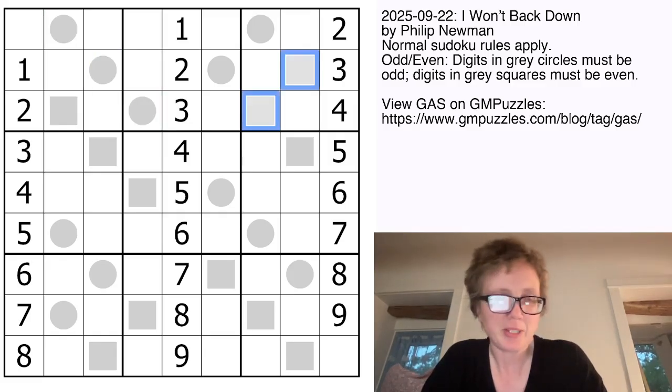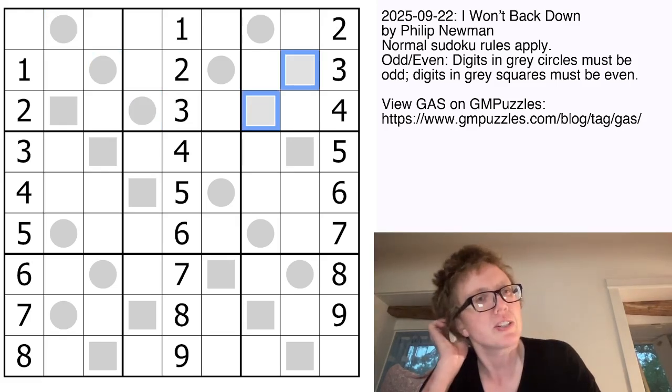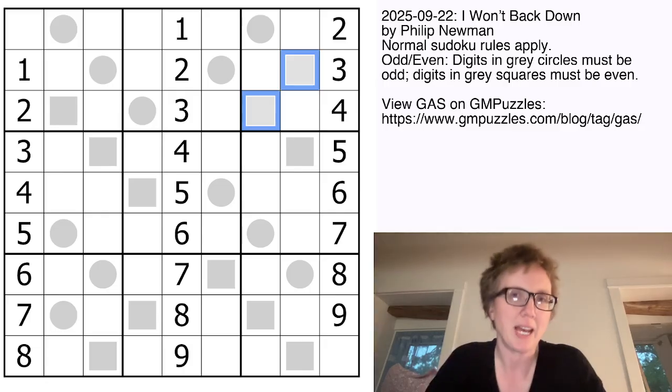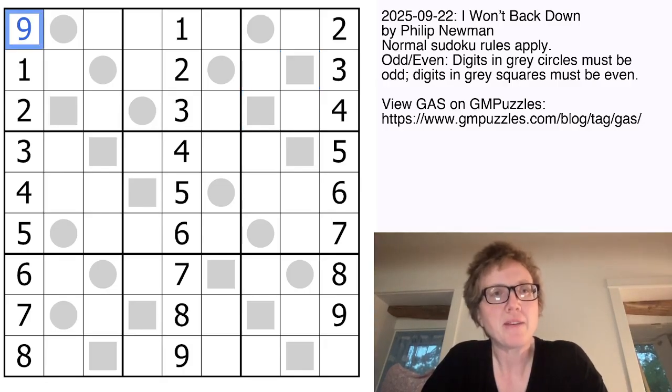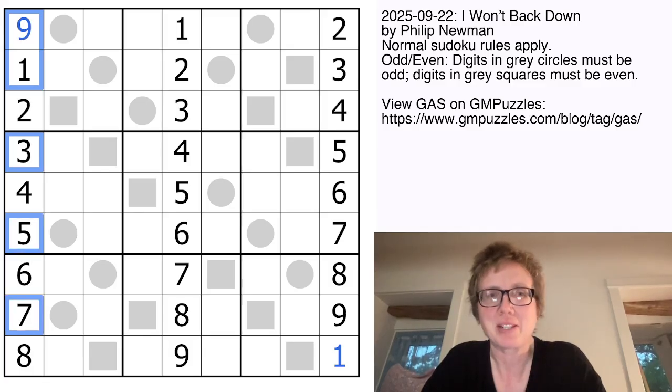We have standard sudoku rules, placing the digits 1 through 9 once each in each row, each column, and each outlined 3x3 region. On top of that, some cells are marked with gray circles and some with gray squares. The gray circles will always have odd digits, and the gray squares will always have even digits. I'm going to start by filling in our columns in Philip's theme for this month, where he's been using this arrangement of givens.